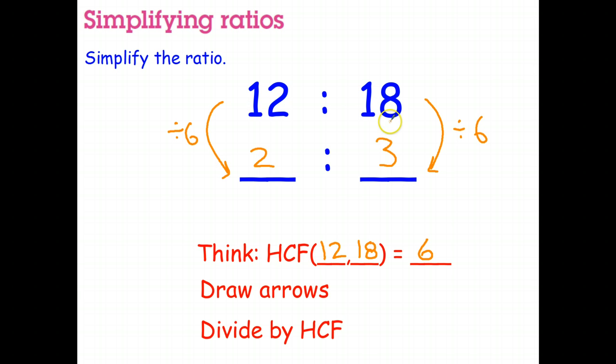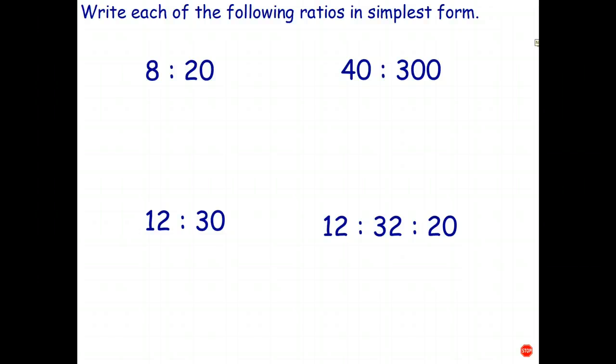So basically what you're doing is exactly the same thing as you do when you're simplifying fractions. You just divide both numbers by the highest common factor. Let's try a couple. I'll do the first two for extra practice and then you do the next two.